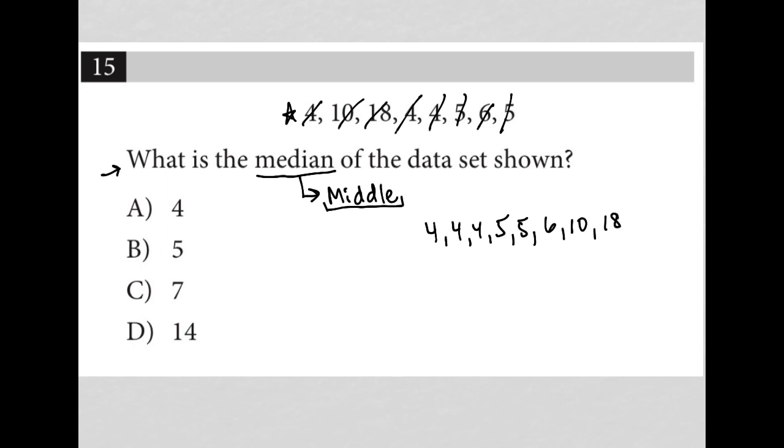So now all of the data is in ascending order. I just start to cross off these data points from the edges until I identify the middle number. In this case, there are two middle numbers.